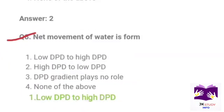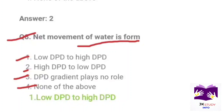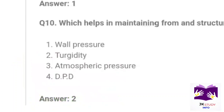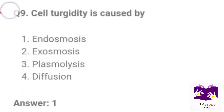Next question: The net movement of water is from? Option 1: low DPD to high DPD. Option 2: high DPD to low DPD. Option 3: DPD gradient plays no role. Option 4: none of the above. Correct option is Part 1: low DPD to high DPD. Next question: Cell turgidity is caused by? Option 1: endosmosis.